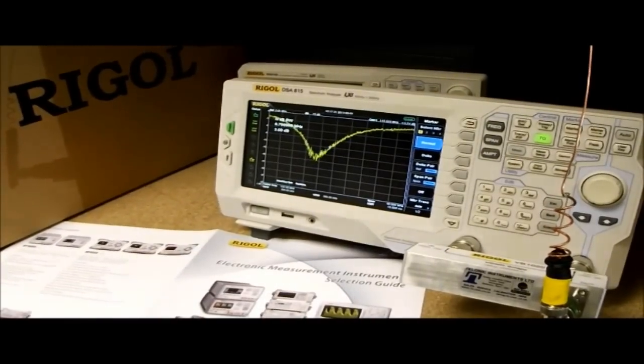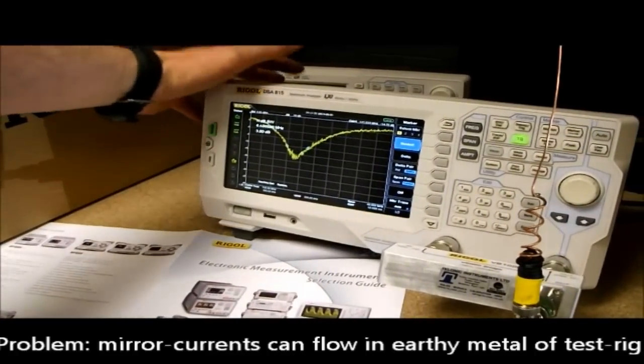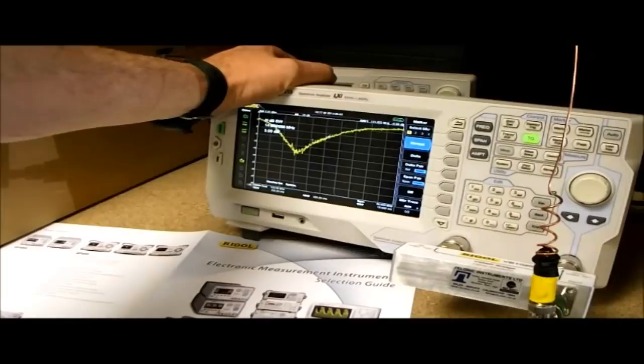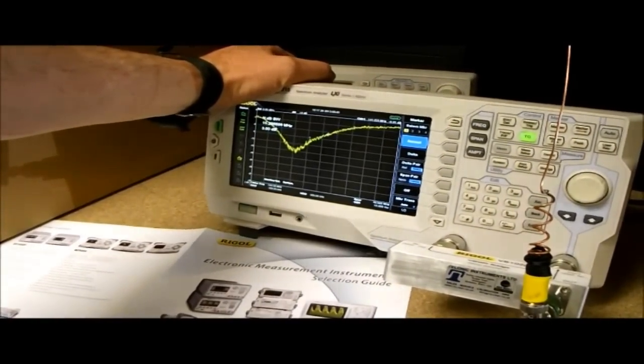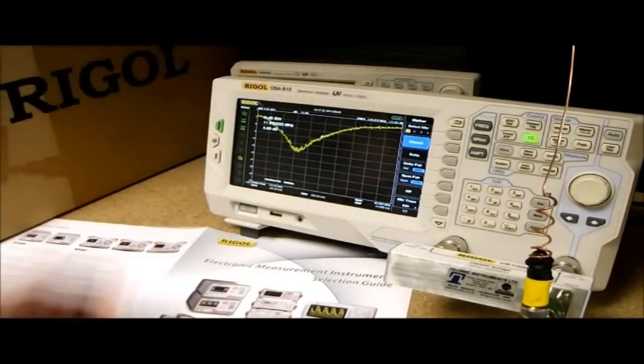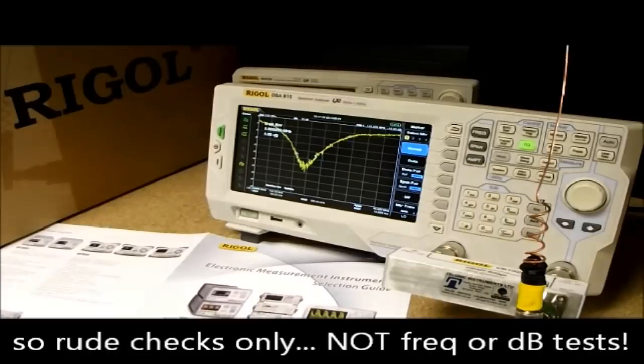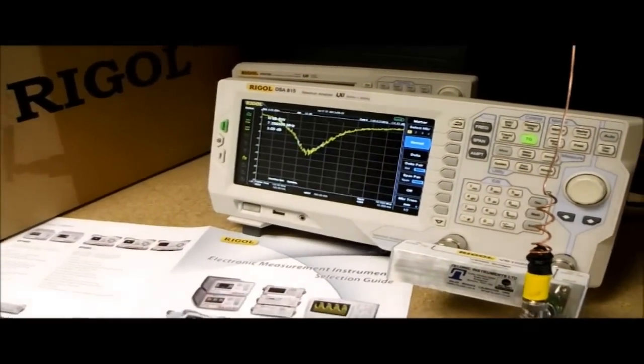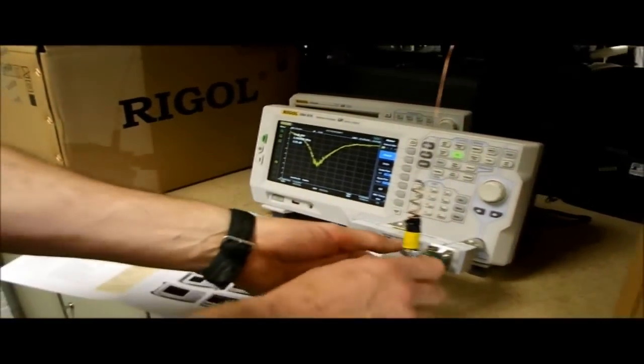Now, this is an incorrect procedure for testing a rubber duck antenna. You can see if I simply put my hand on the edge of the analyzer there, then the trace of resonance shifts down by about 8 MHz. If I take my hand away again, it shifts back up again. There's clearly something wrong with this test setup. So what we need to do is use the correct procedure.